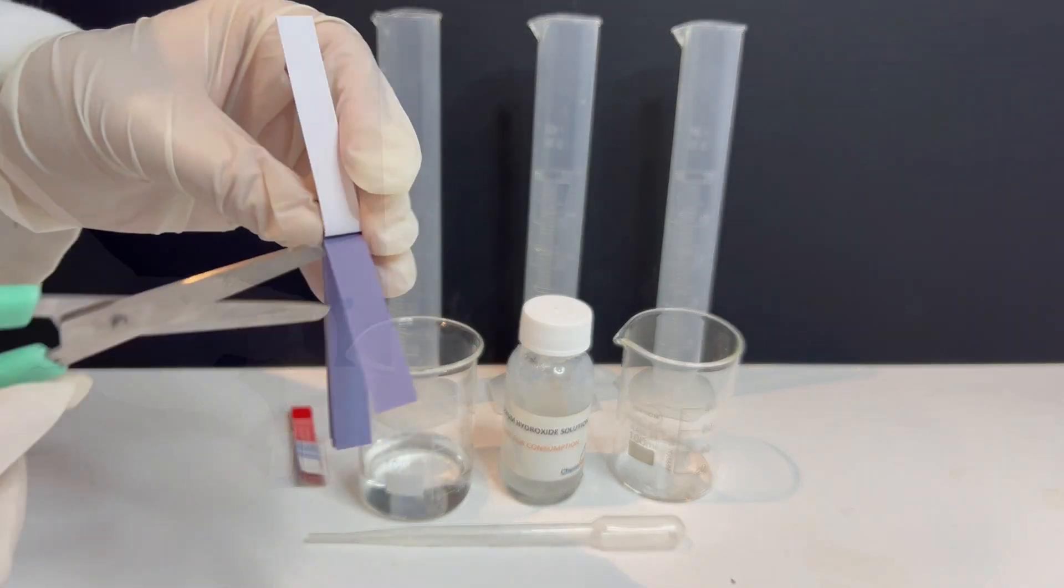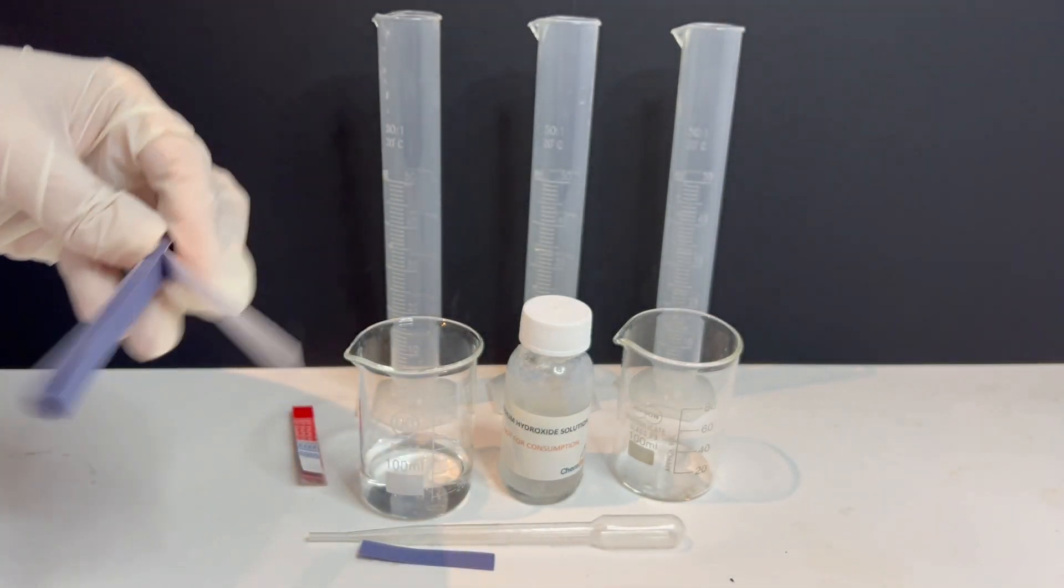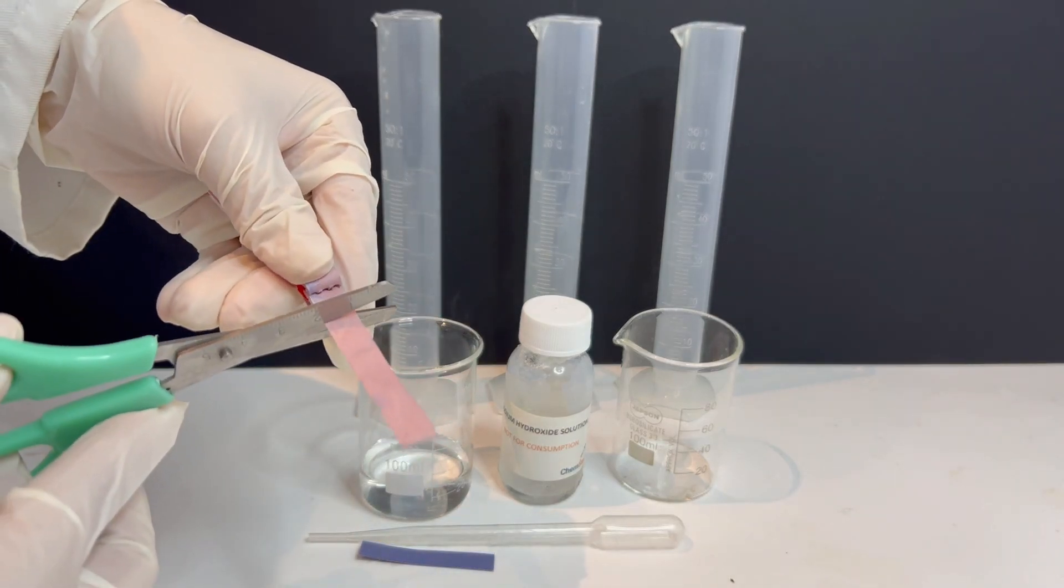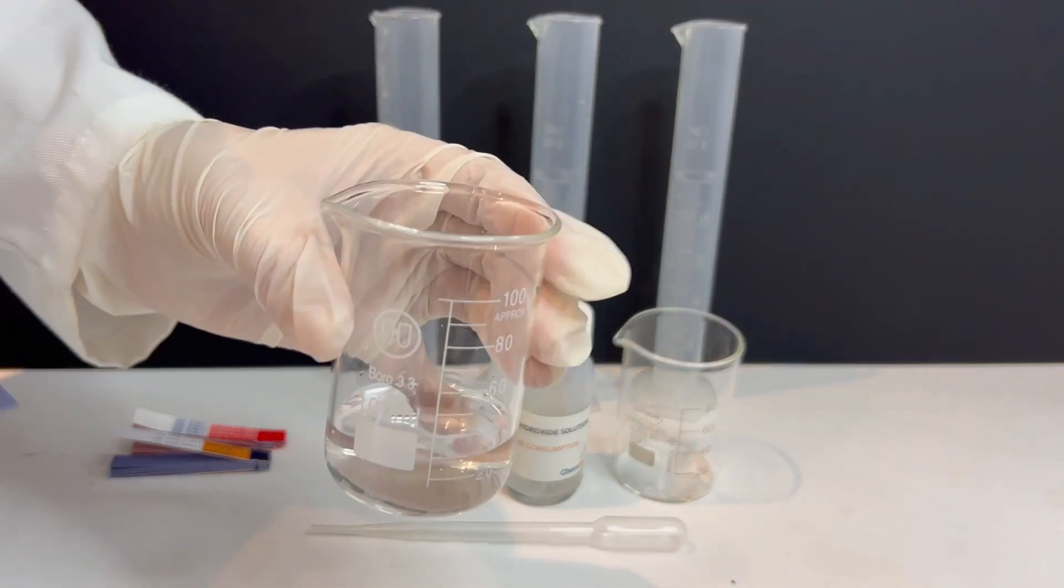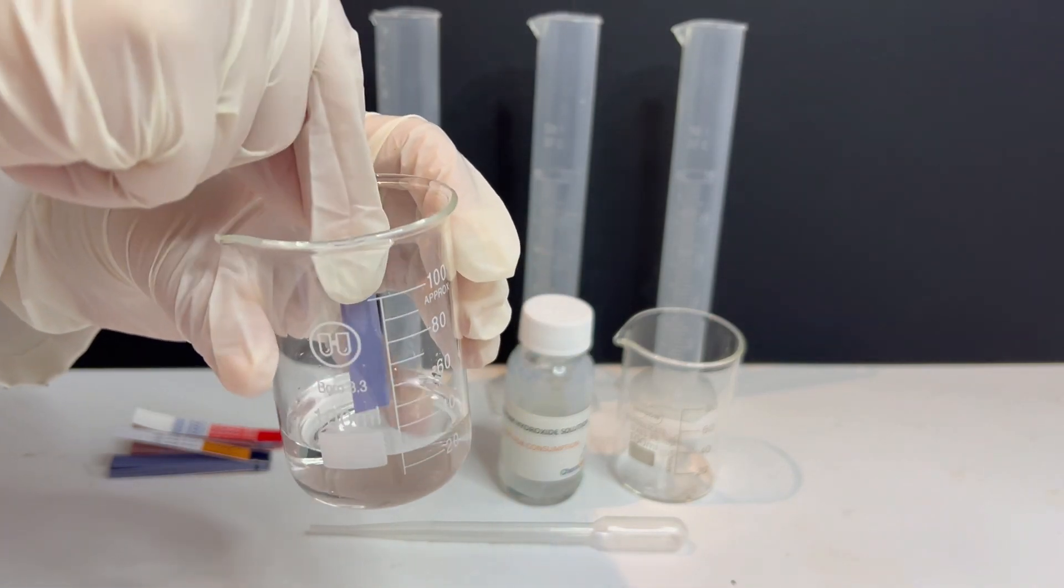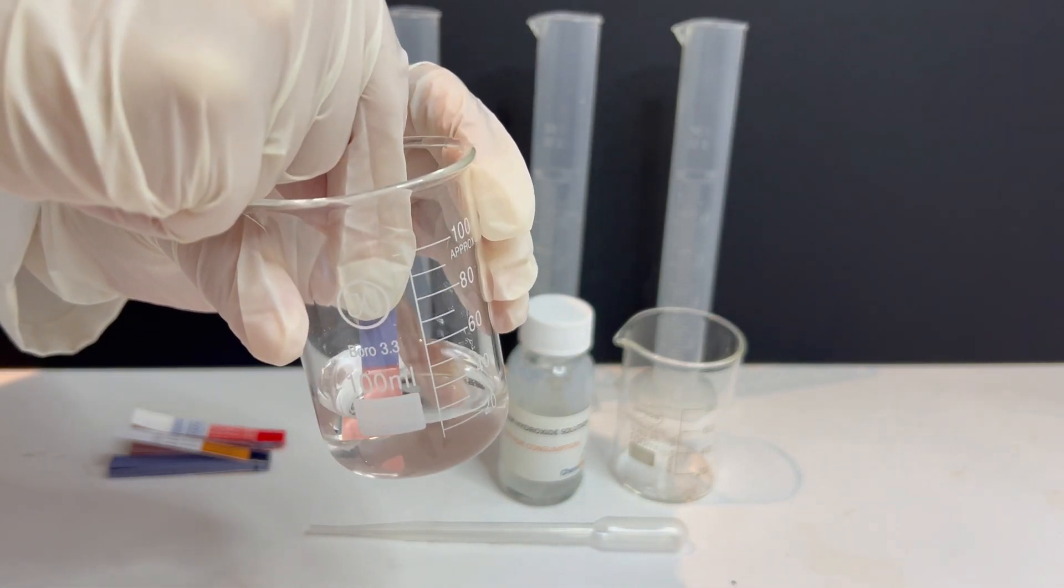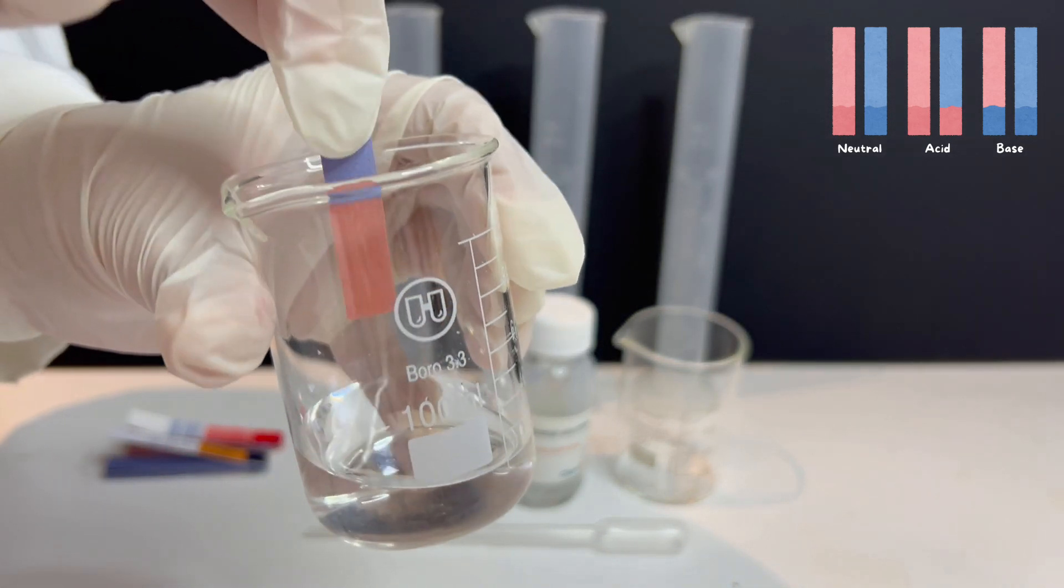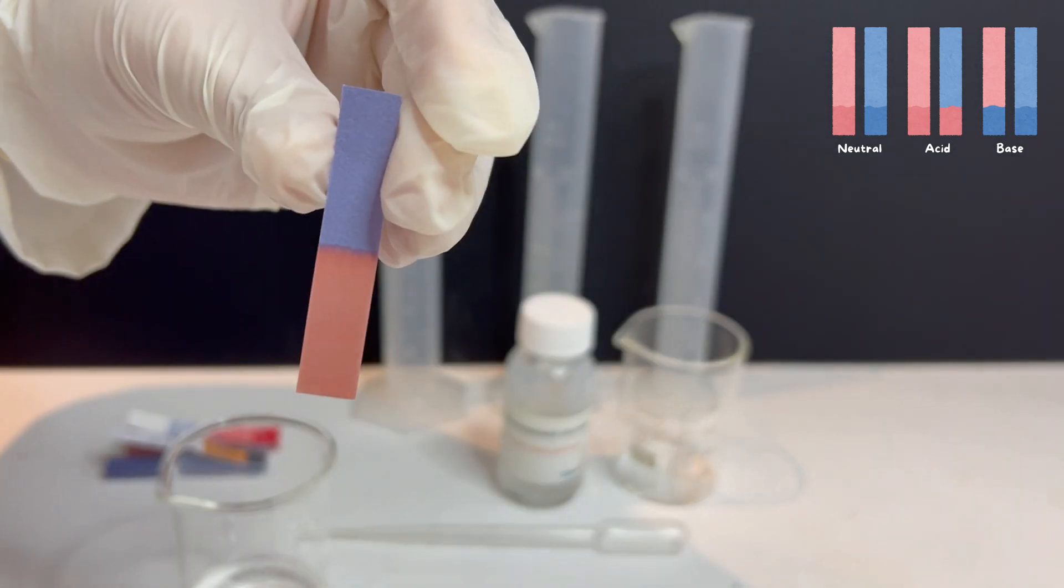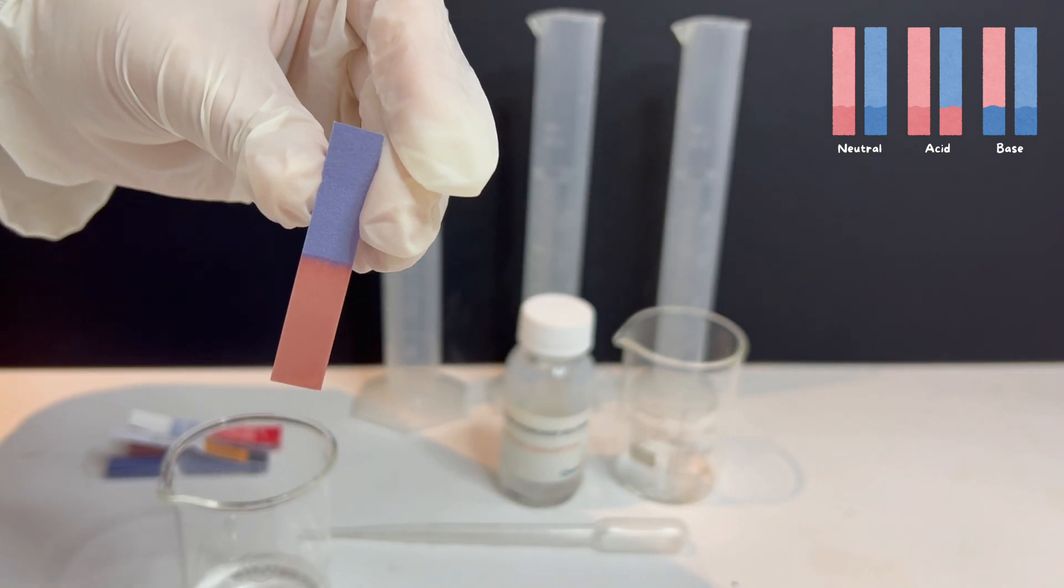I now use my scissors to cut a small piece of blue litmus paper and a small piece of red litmus paper. Let's start with the blue litmus paper. I dip the blue litmus into the vinegar solution. Immediately I notice that the blue litmus paper turns red. This tells me that vinegar is an acidic substance. It's an acid.